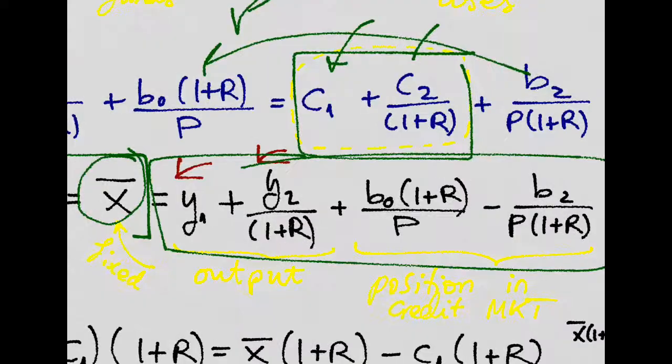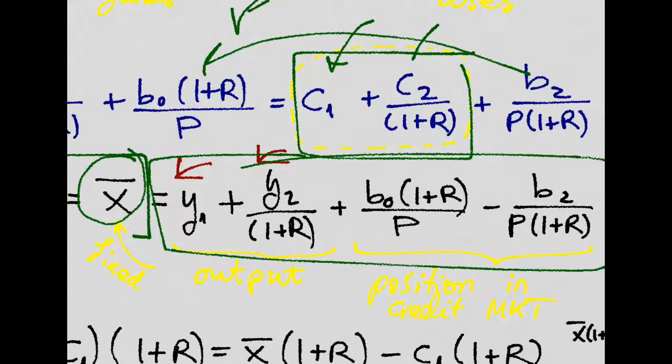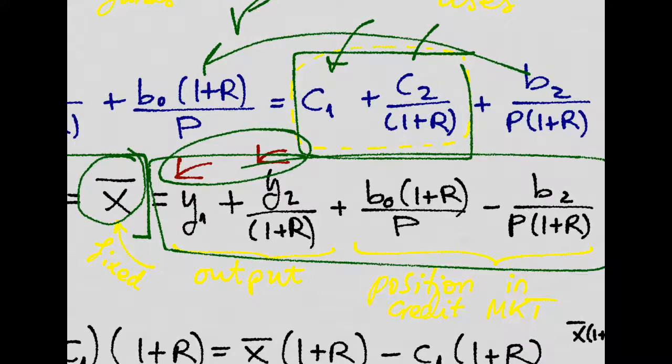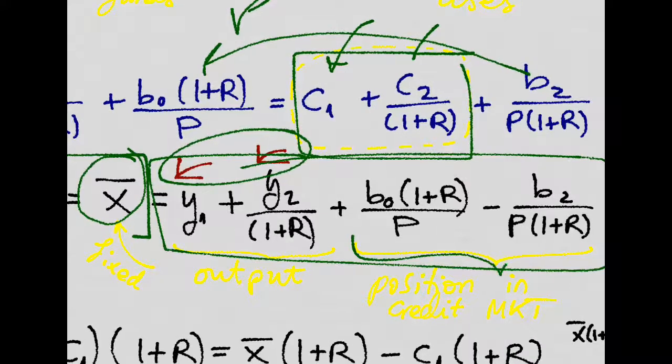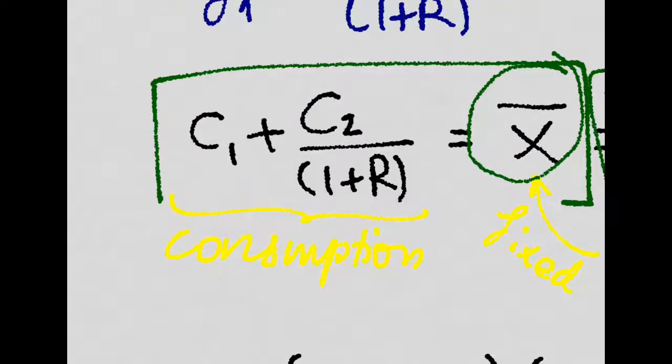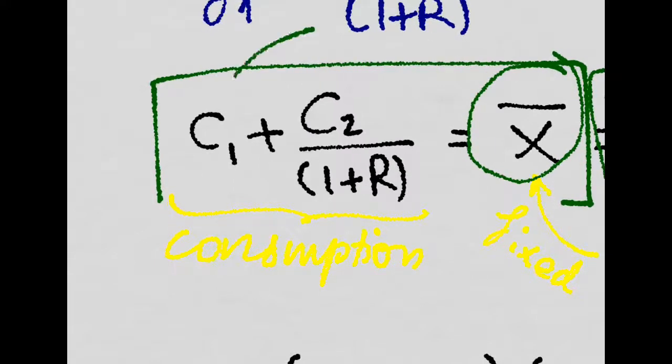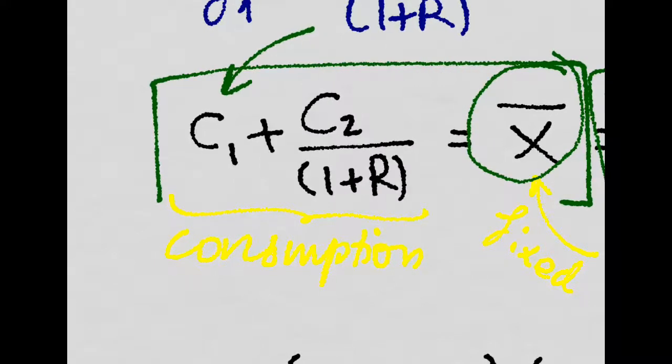If we know how much output we're going to get, because that comes from the production functions, and we know what our position in the credit market is going to be, then we will be able to make a decision about consumption today and consumption in the future.